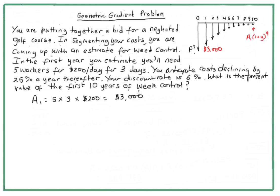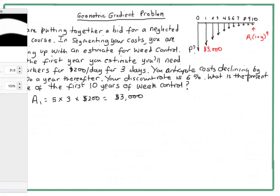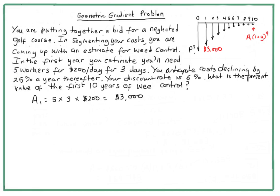The question asks for the present value of the first ten years of weed control. This is a pretty standard geometric gradient problem, so let's work through it together and hopefully this will make this type of problem easier to do in the future.